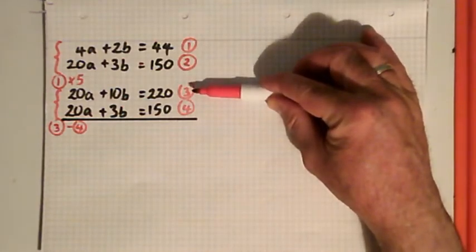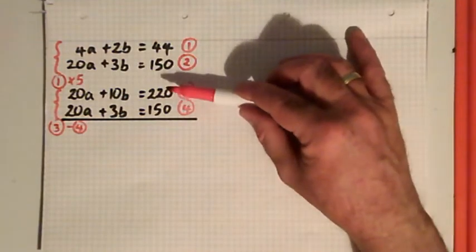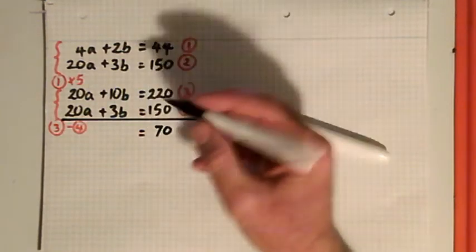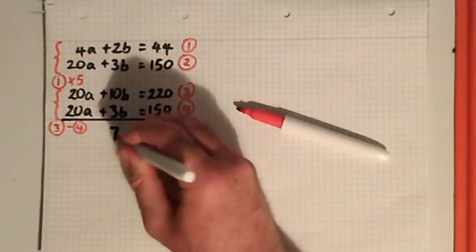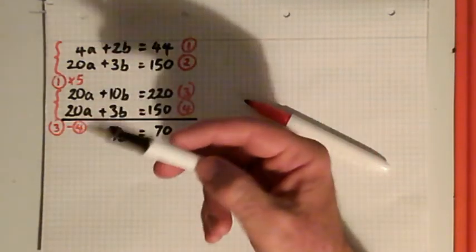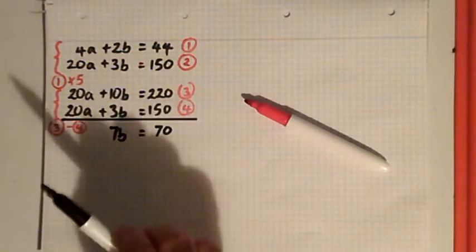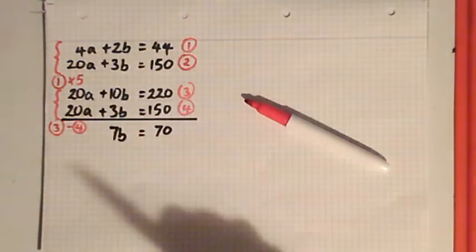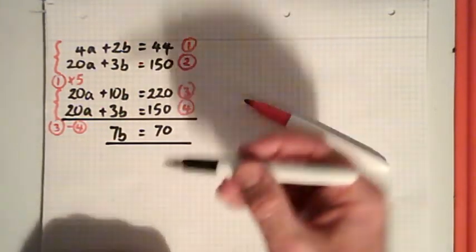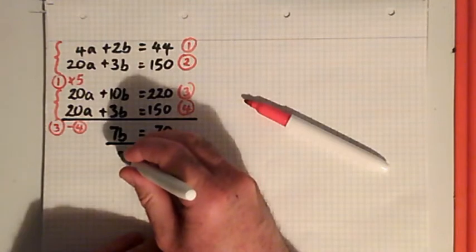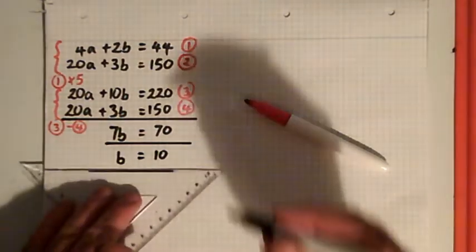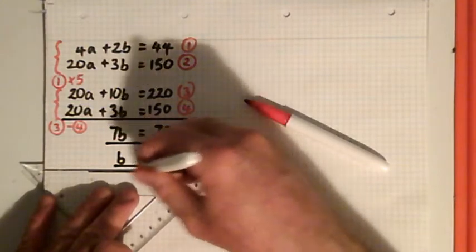Now I'm going to subtract one equation from the other. I'll take equation 3 and subtract everything in equation 4. What happens with the a's is they cancel out. We've managed to get a simple equation, one equation in one unknown: 7b = 70. So I would divide both sides by 7, and that would be b = 10.